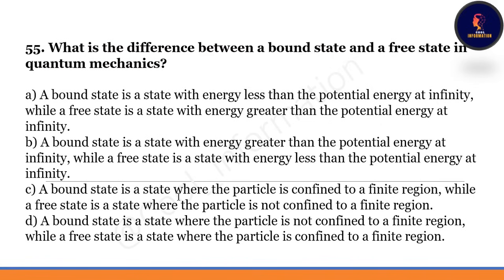What is the difference between a bound state and a free state in quantum mechanics? Correct option is C — a bound state is a state where the particle is confined to a finite region, while a free state is a state where the particle is not confined to a finite region.